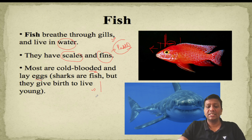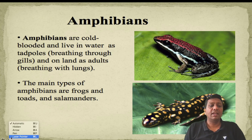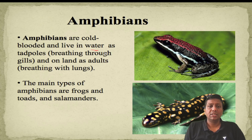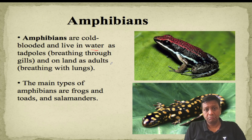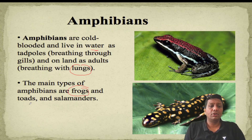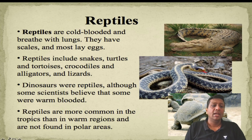Amphibians are cold-blooded animals that live in water as tadpoles. They breathe through gills when inside water bodies and through lungs when on the earth's surface. The main types of amphibians are frogs, toads, and salamanders.